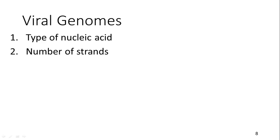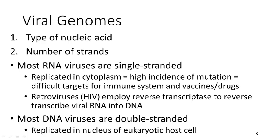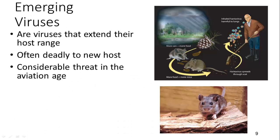Viral genomes can be classified by nucleic acid type — DNA or RNA — and also by number of strands. Most RNA viruses are single-stranded and are replicated in the cytoplasm, since they only need translation. These have a high incidence of mutation because they don't go through the rigorous error-checking process of DNA replication or transcription. Retroviruses use the enzyme reverse transcriptase to transcribe viral RNA into DNA. Most DNA viruses are double-stranded and are replicated in the nucleus of the eukaryotic host cell.